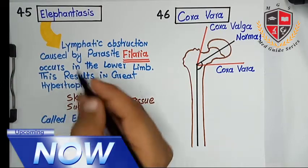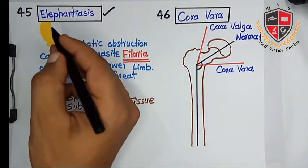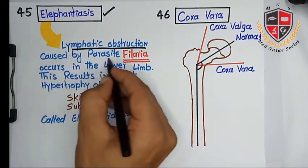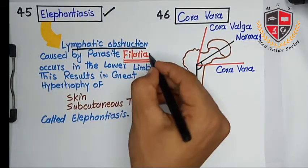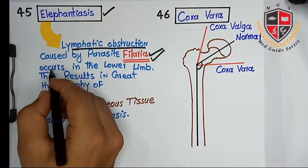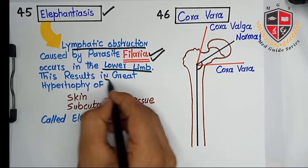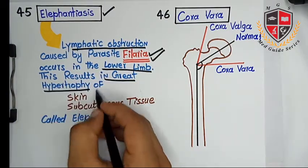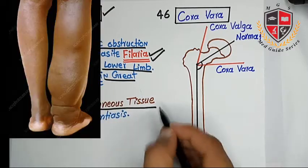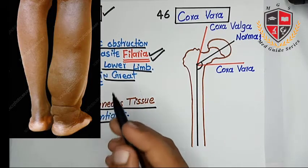The next clinical topic is elephantiasis. Lymphatic obstruction caused by the parasite filaria occurs in the lower limb. This results in great hypertrophy of the skin and subcutaneous tissues, which is called elephantiasis. It is characterized by inflammation and lymphatic obstruction.